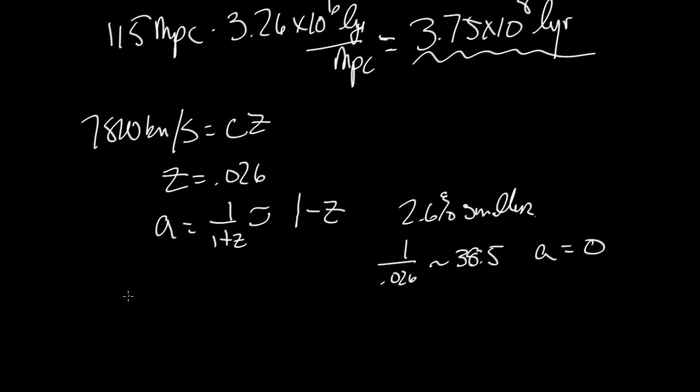So if I take the time of the Big Bang to be equal to 38.5 times 3.75 times 10 to the 8th years, I get, voila, 14.4 billion years. Same answer we got before, a slightly different way to think about it.